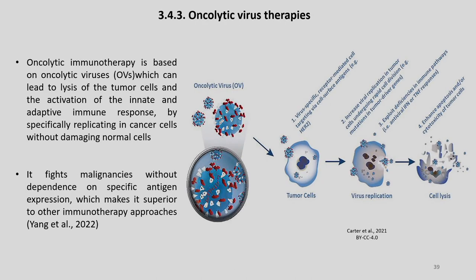Let us now discuss about oncolytic virus therapies. In oncolytic immunotherapy, the therapy is based on oncolytic viruses which can lead to lysis of the tumor cells and the activation of the innate and adaptive immune response by specifically replicating in cancer cells without damaging normal cells. These oncolytic viruses fight malignancies without dependence on specific antigen expression, which makes them superior to other immunotherapy processes.